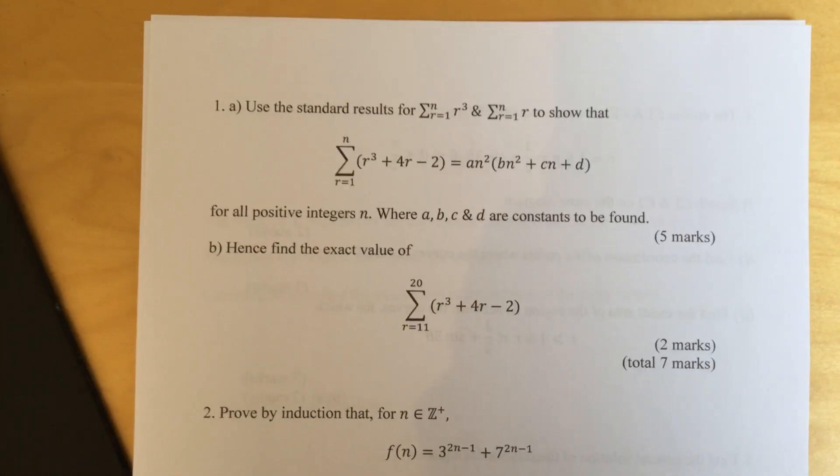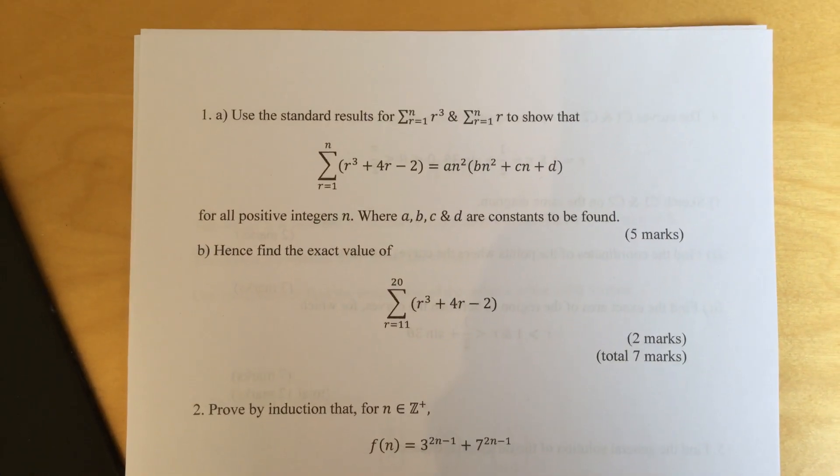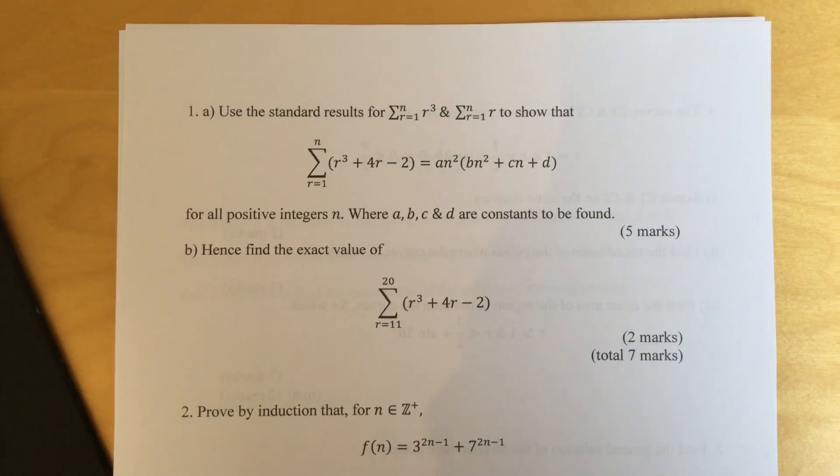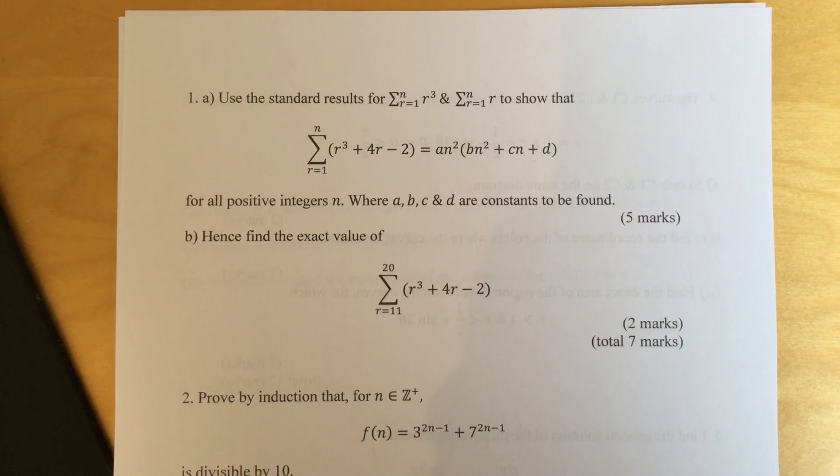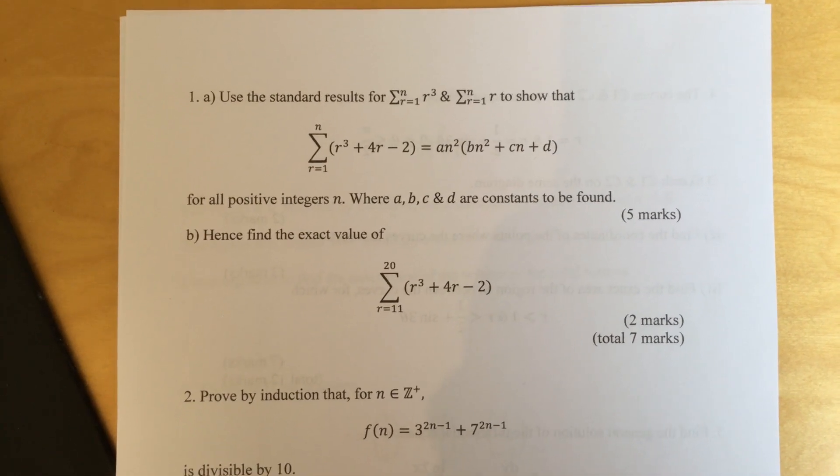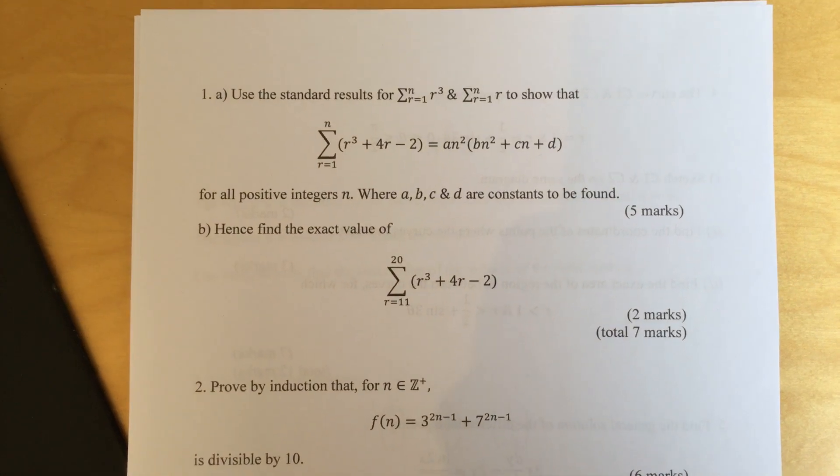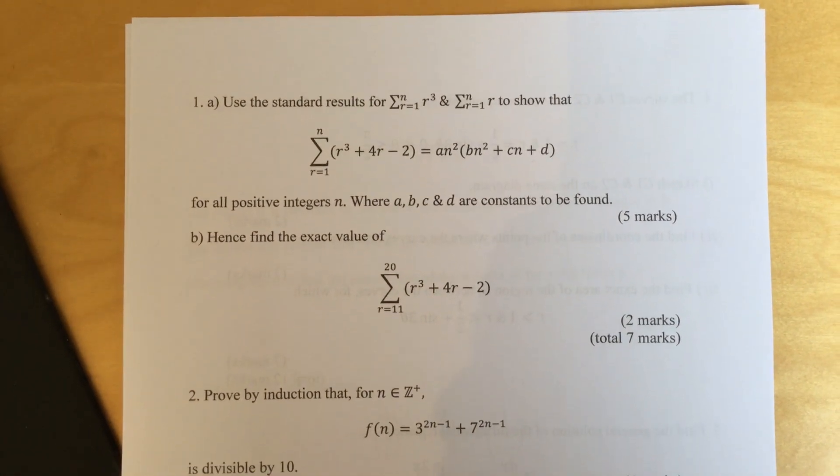Question one, part a. Use the standard results for sum of r equals one to n of r cubed and sum of r equals one to n of r to show that sum of r equals one to n of r cubed plus 4r minus 2 equals a n squared bracket b n squared plus cn plus d for all positive integers n, where a, b, c, and d are constants to be found.